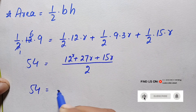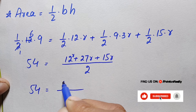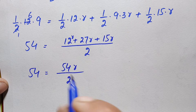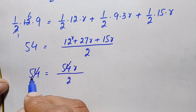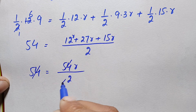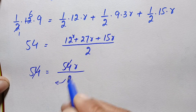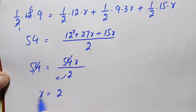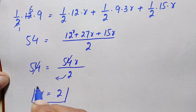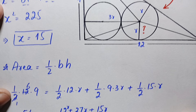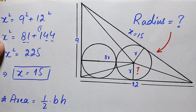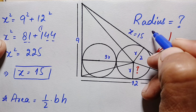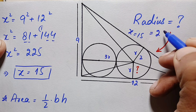We get 54 equals 54r divided by 2. Cancelling 54 on both sides and bringing the 2 to the left-hand side, we get r equals 2 units. So finally, the radius of each circle in this right angle triangle is 2 units.